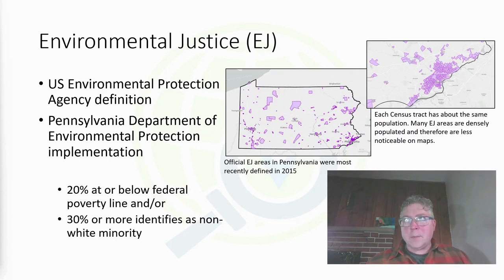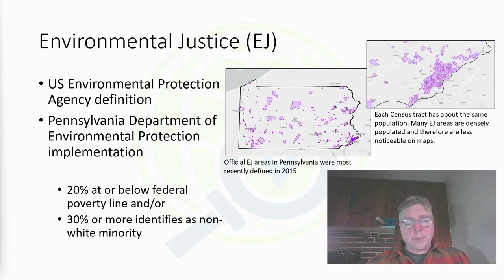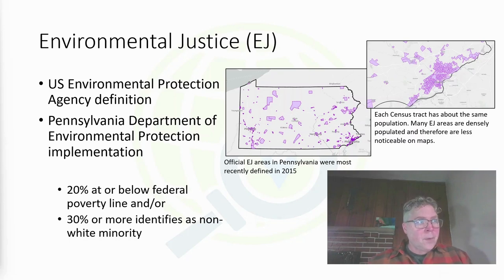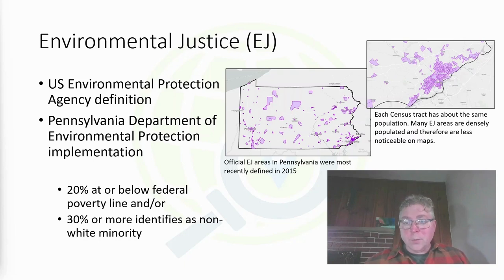States have some ability to implement these in different ways. Pennsylvania takes the basic approach — the minimal approach of what can define environmental justice areas — looking at a combination of two different factors: 20% at or below the federal poverty line, and/or 30% or more identifying as a non-white minority. These are measured within census tracts, which are areas where census data is aggregated to make this determination.